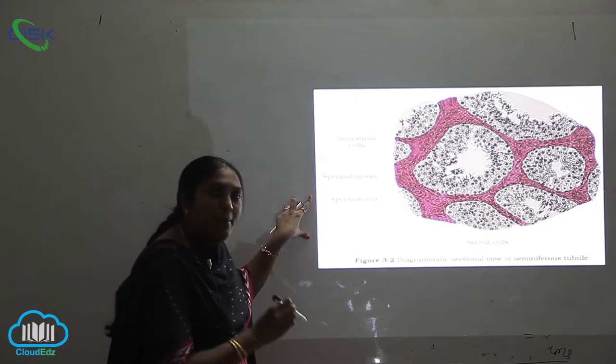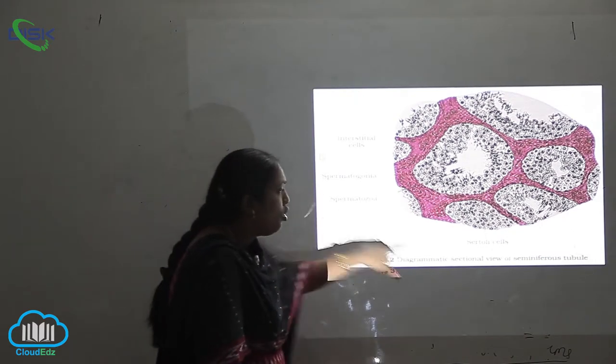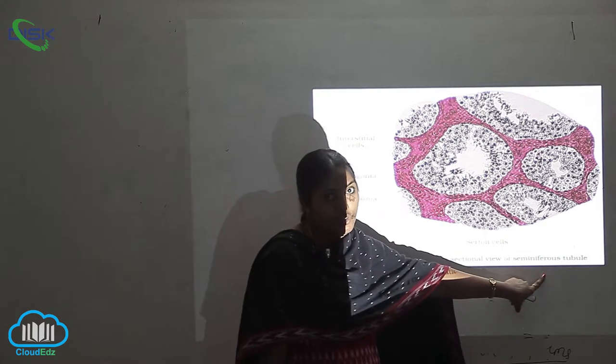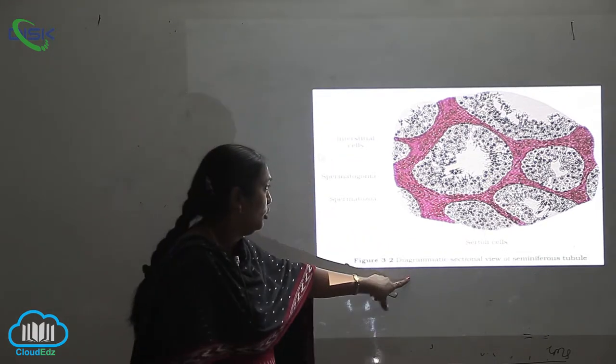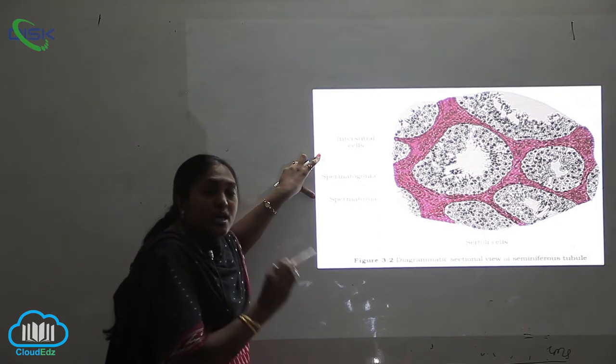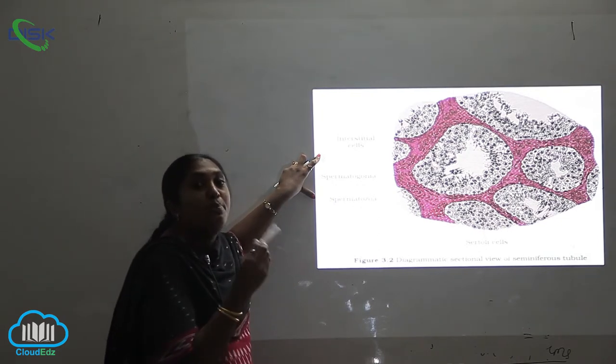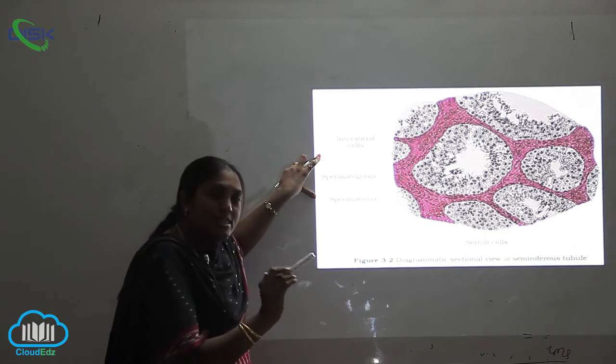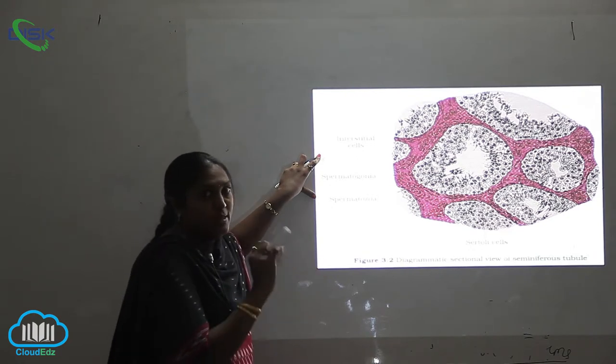This is the diagrammatic sectional view of the seminiferous tubule. This is nothing but where you can see the production of the sperms, or in other words, the site of the production of the sperms.